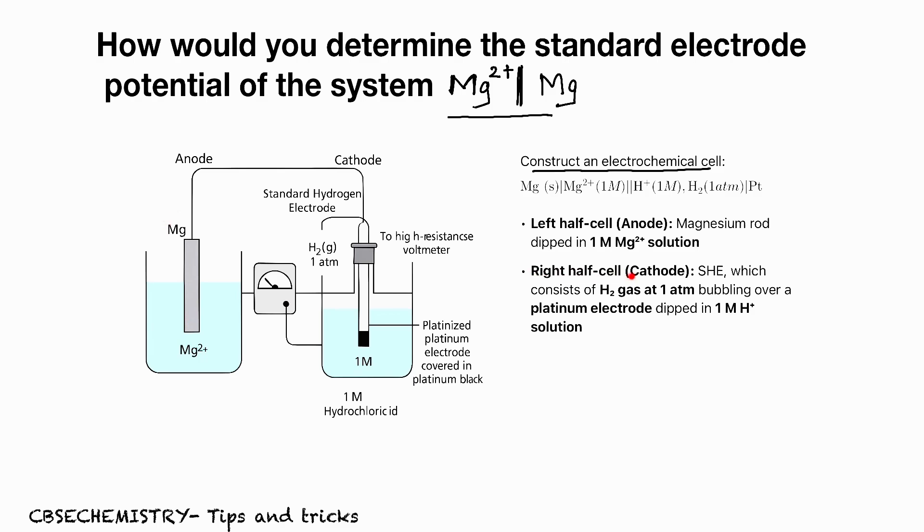Left half cell, and on right half cell, we will be having SHE whose reduction potential we already know is 0. Left hand side, we have Mg dipped in Mg²⁺. And on right hand side, we have SHE.